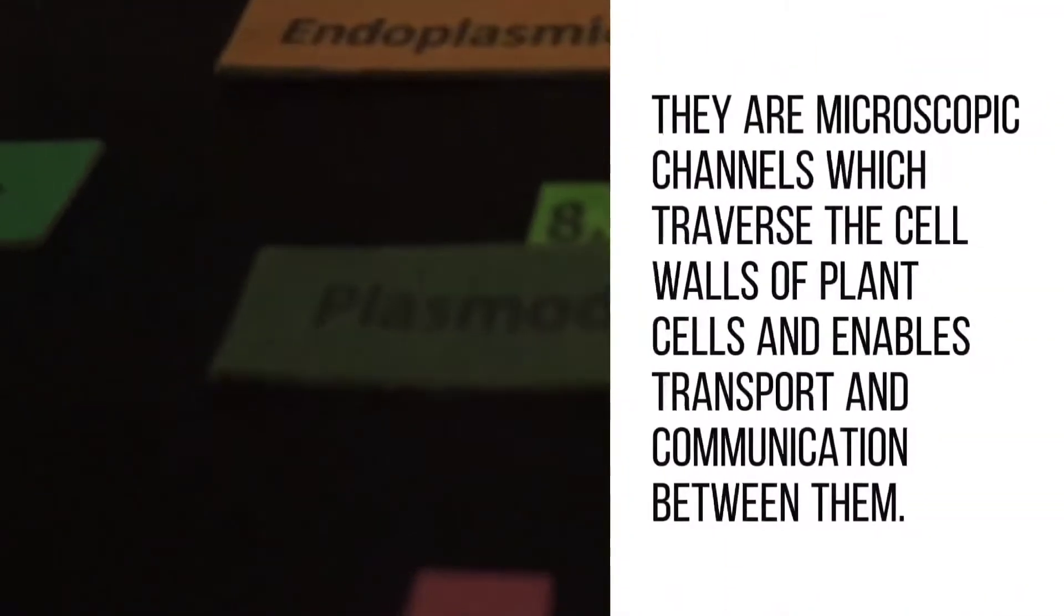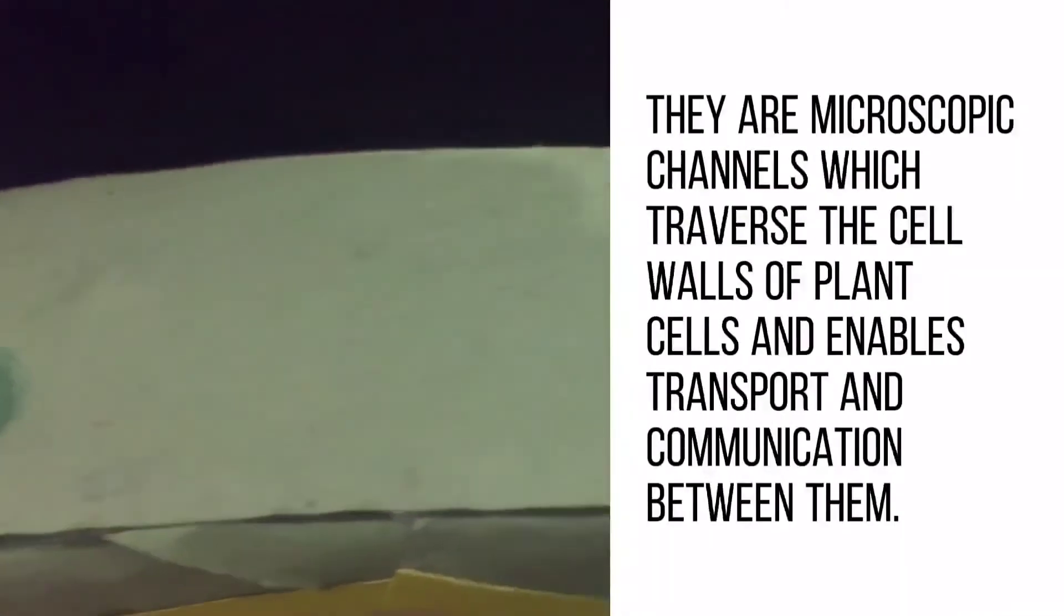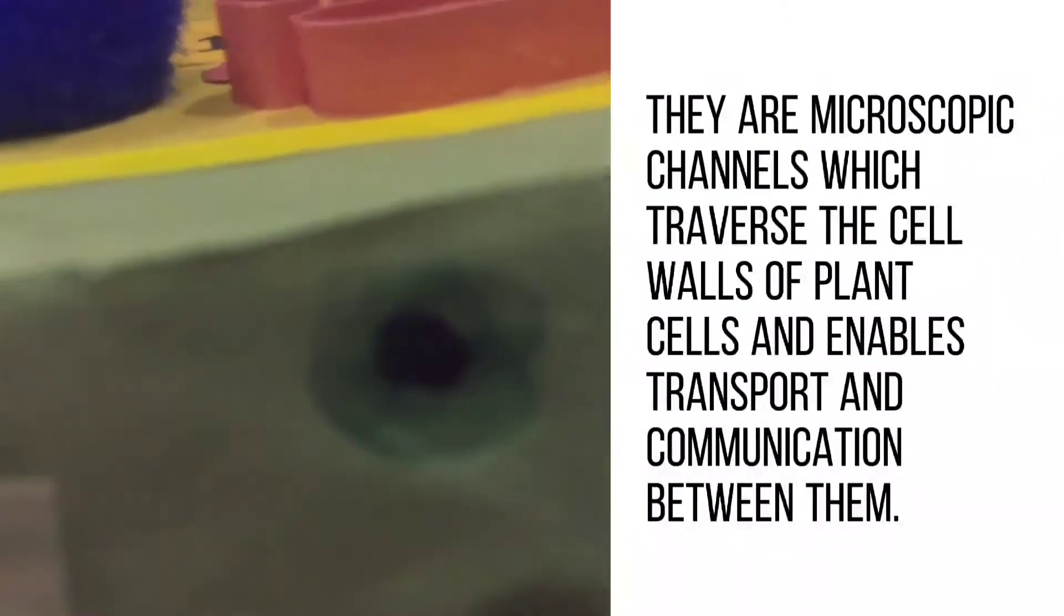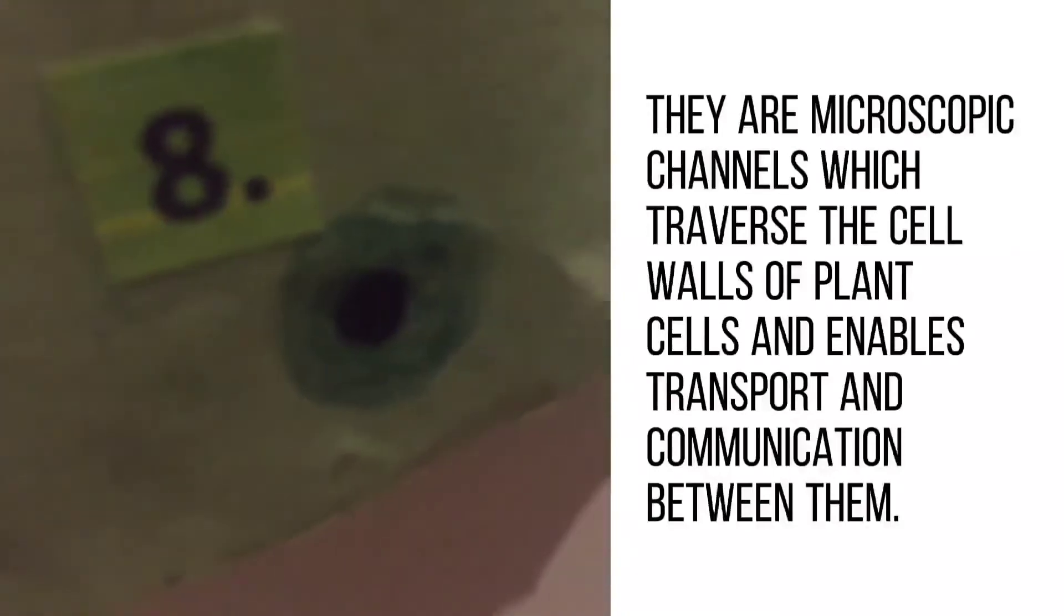Plasmodesmata are microscopic channels which traverse the cell walls of plant cells and enable transport and communication between them.